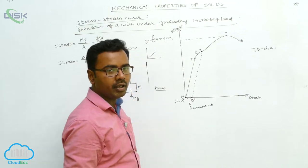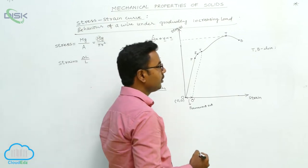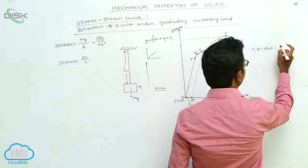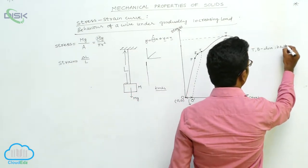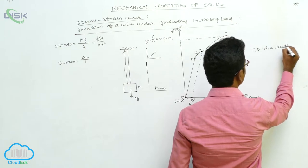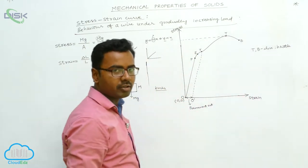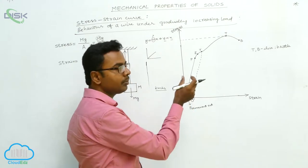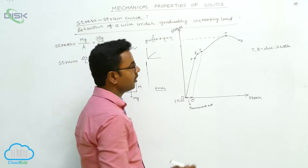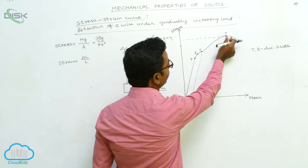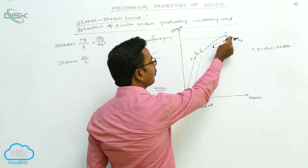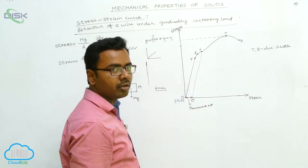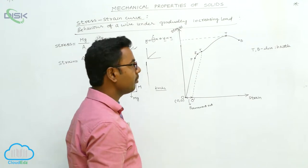If the tensile point and breaking point are close to each other on a graph, such materials are called brittle materials. For a wire made of glass, when you plot the graph, the tensile point and breaking point are close to each other, meaning after crossing the tensile point the wire immediately breaks. The best example of a brittle material is glass.